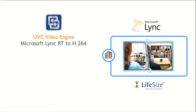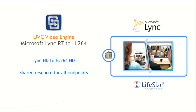What the UVC Video Engine does is transcode RT Video to H.264, which is natively supported, so we can bring HD and VGA into a video conferencing call. It's a shared resource for all of your LifeSize endpoints. Say you have four LifeSize endpoints and want to bring in an occasional Lync user — you can have one instance of the UVC Video Engine shared across all four. Or you can have multiple UVC Video Engine instances for multiple simultaneous calls with Lync. We scale to fit your needs very easily.